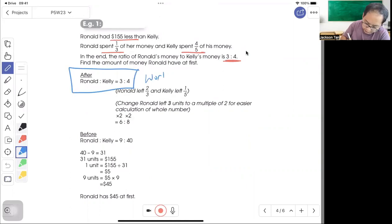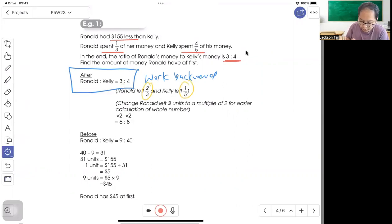Work backwards in such that you spent one-third, so you left with two-thirds. Kelly spent four-fifths, left one-fifth. Here it's a bit hard to divide by 2, so why not make it a nice whole number like 6 to 8, then 6 can divide by 2 times 3 equals 9, 8 divided 5 times 5 equals 40.